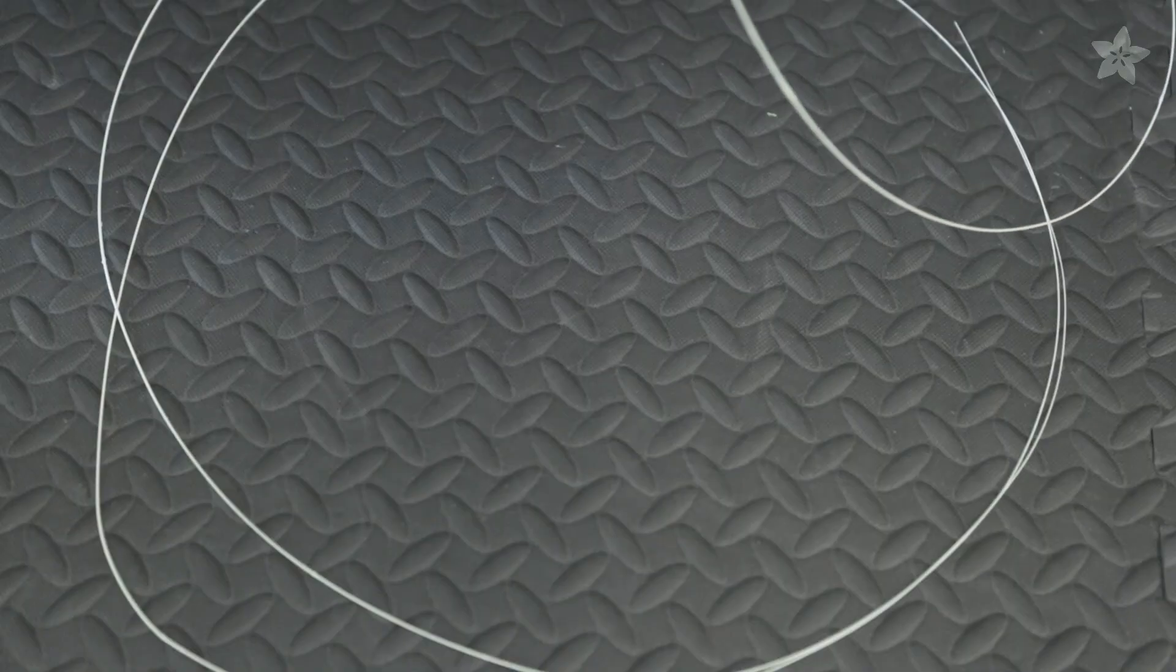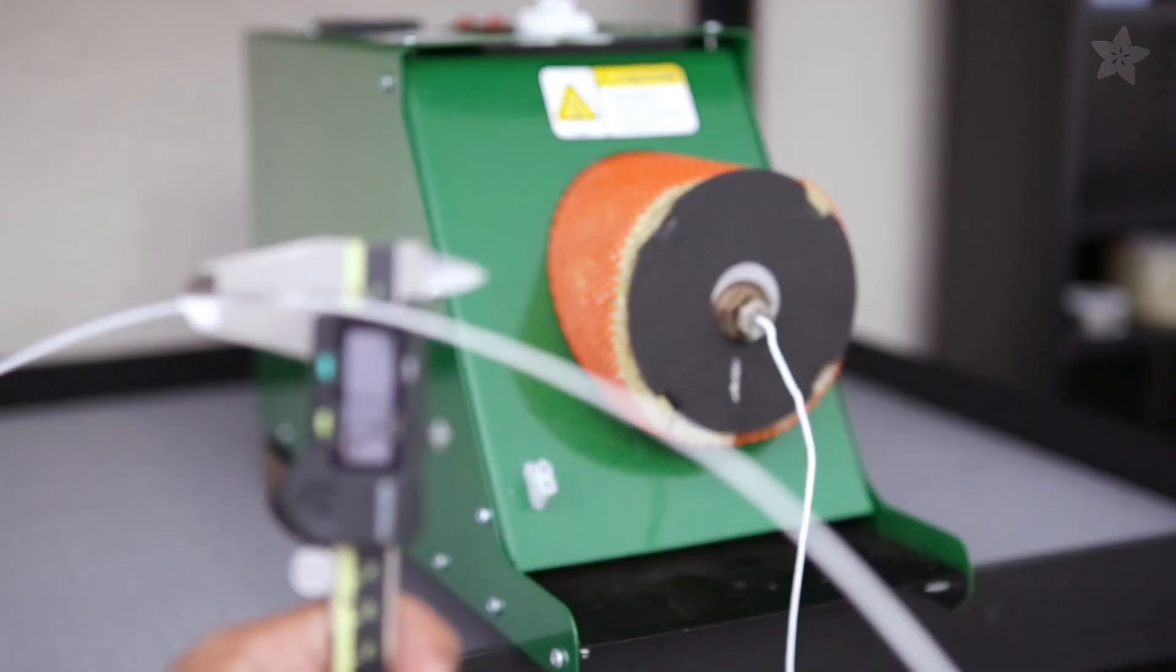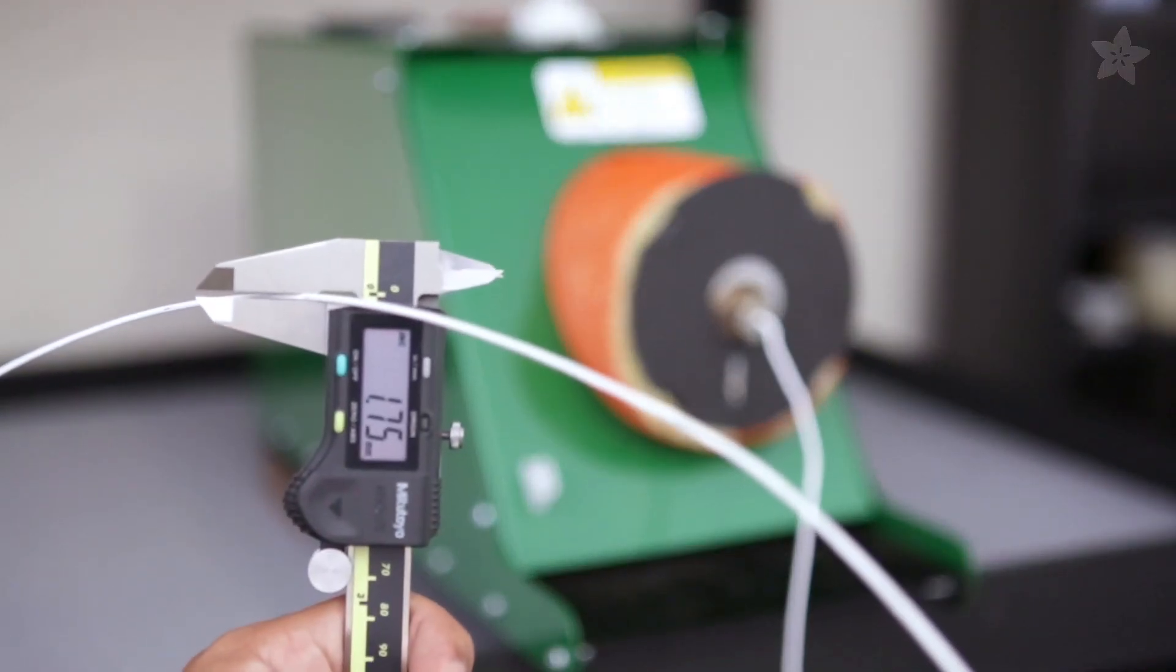Guide the filament down to the floor and use a fan to cool down the plastic as it coils. Once you have extruded a good amount of filament, use a caliper to measure the consistency of the filament diameter.